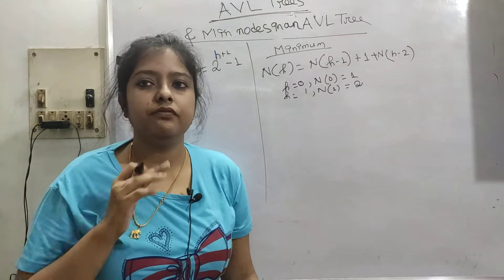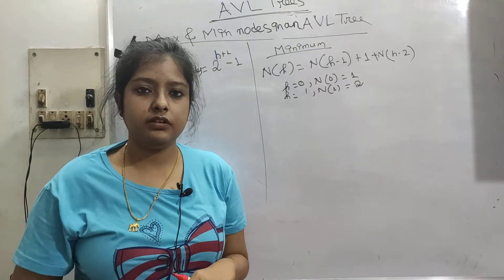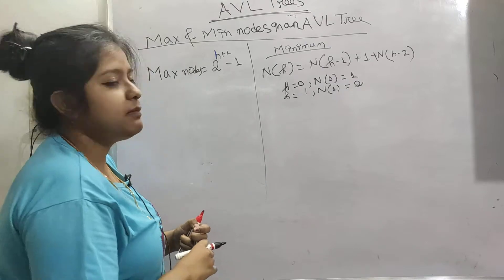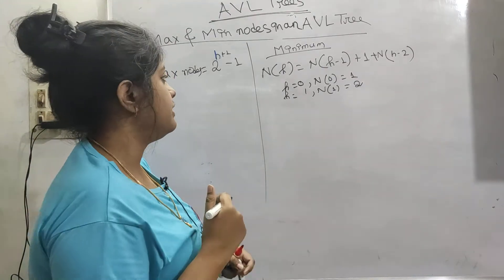Here now we have done AVL tree, how to construct it and how to balance it. Now we have to see maximum and minimum number of nodes present in an AVL tree.